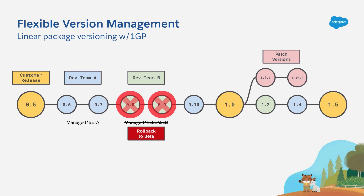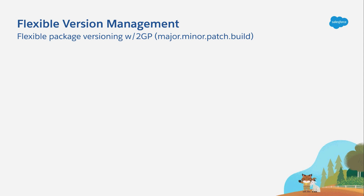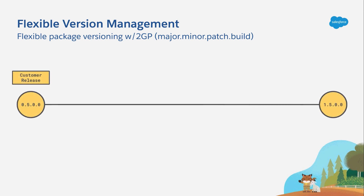So this is, in general, linear version management with 1GP. Now let's see how flexible version management with 2GP might change this story. We're going to look at the same hypothetical journey from customer release 0.5 all the way to 1.5. Only this time we're using 2GP version numbers, which include that fourth spot for the build number — and you'll see in a moment how that comes into play.